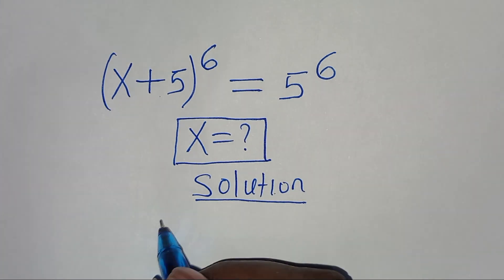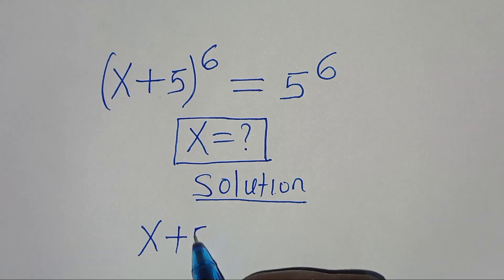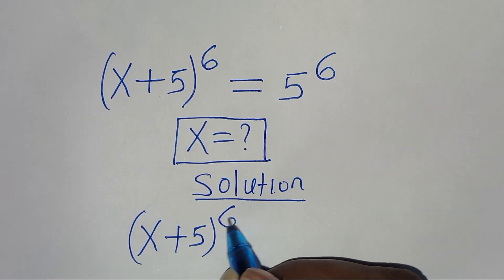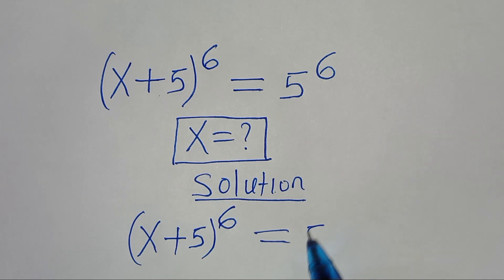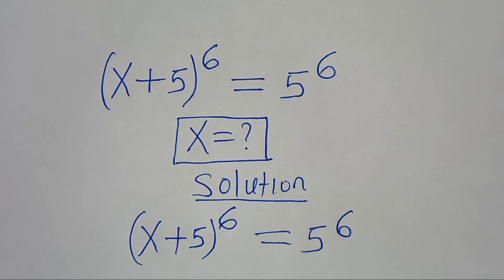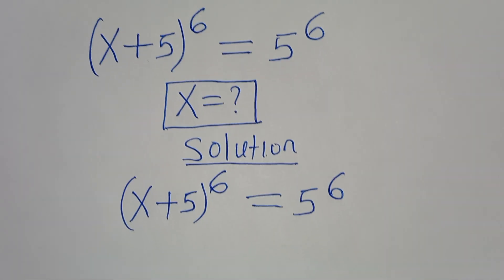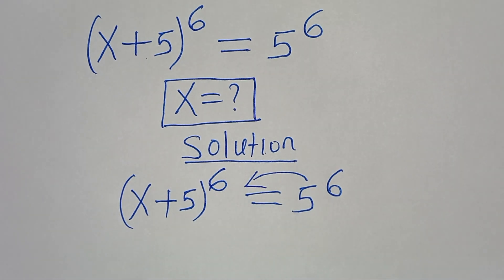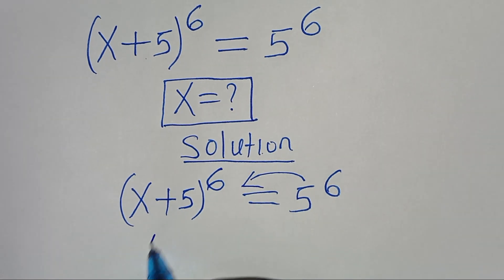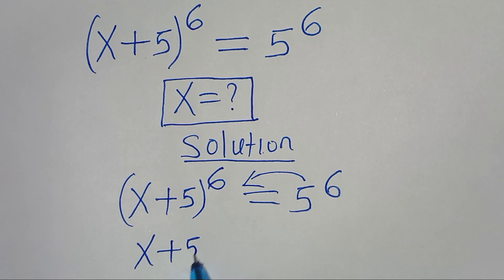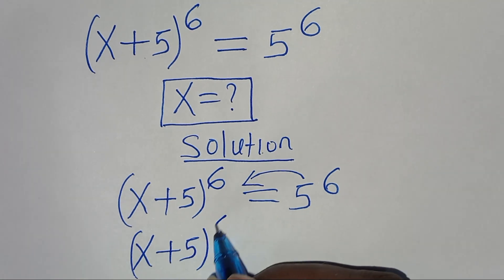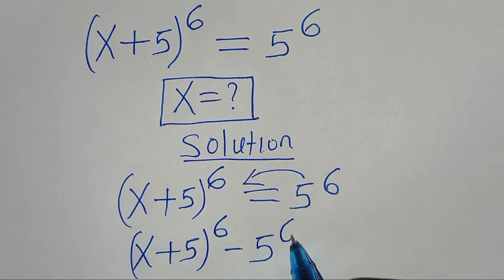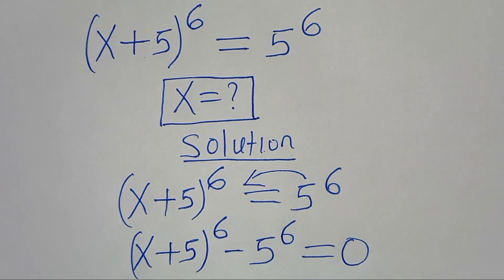We have x plus 5 raised to the power of 6, equal to 5 to the power of 6. The first step is to take 5 to the power of 6 on the left hand side, so that we have x plus 5 raised to the power of 6, subtract 5 to the power of 6, equal to 0.